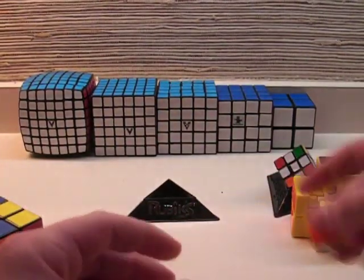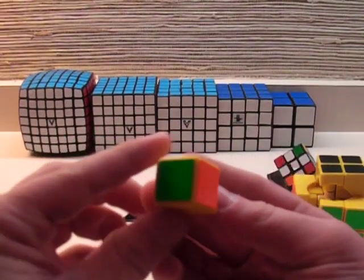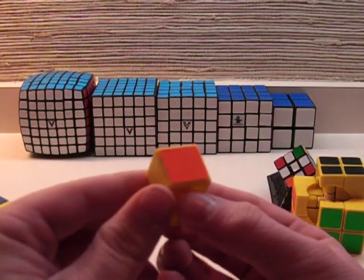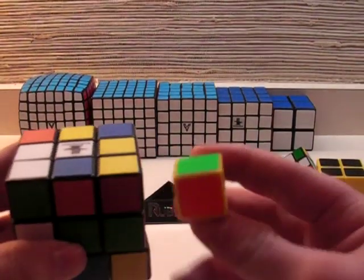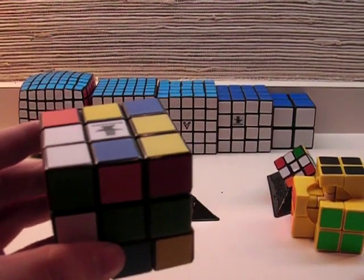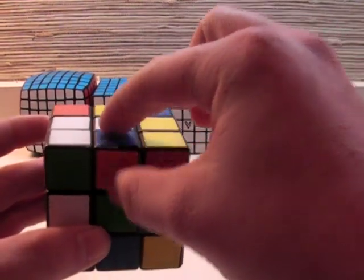Now, these pieces. This is an edge piece, because it only has two colors. As you can see on a normal cube, there are 12 edge pieces connecting two different arms of the core.